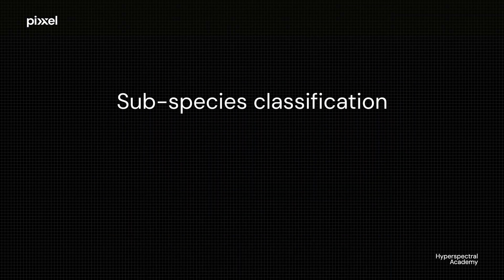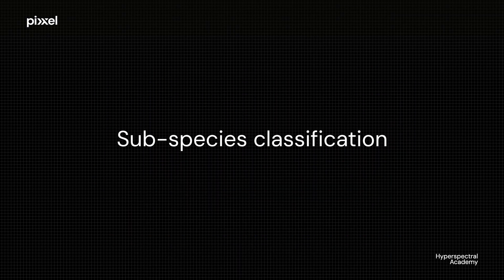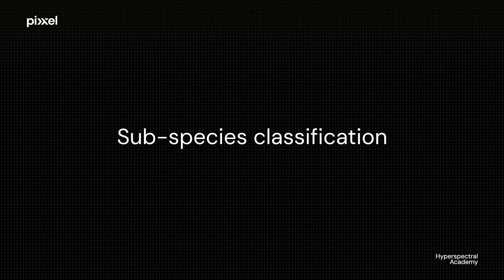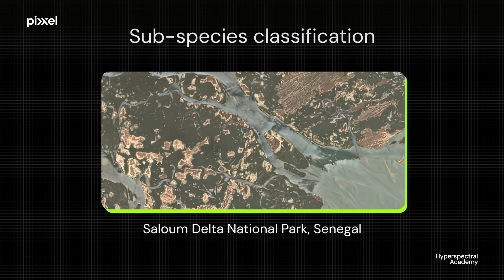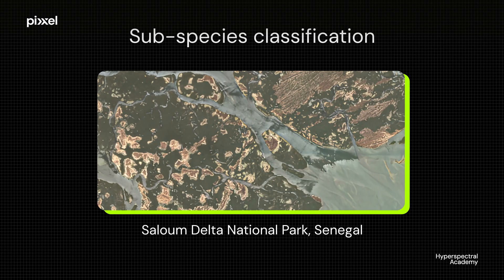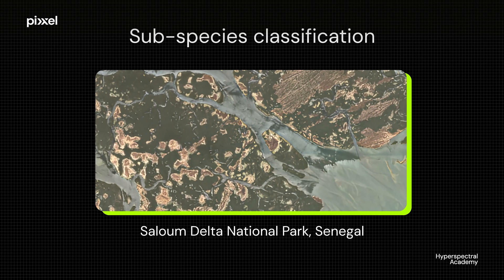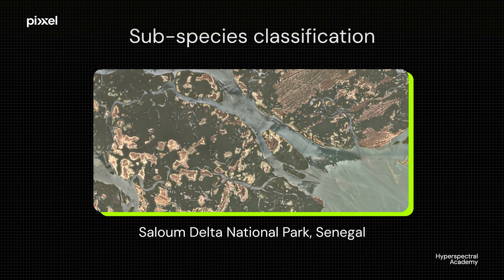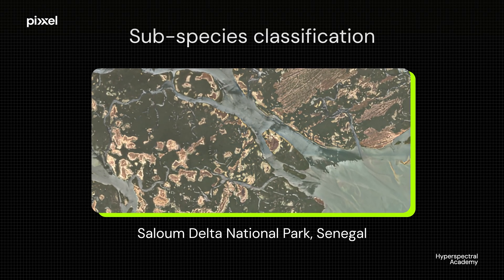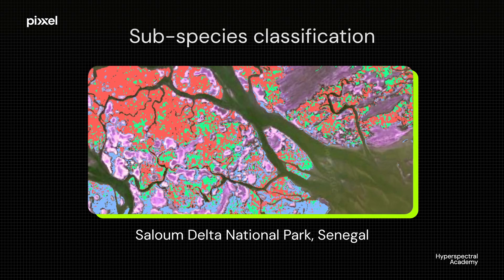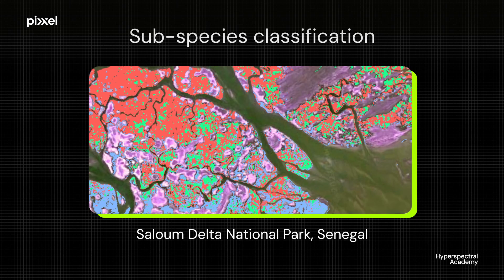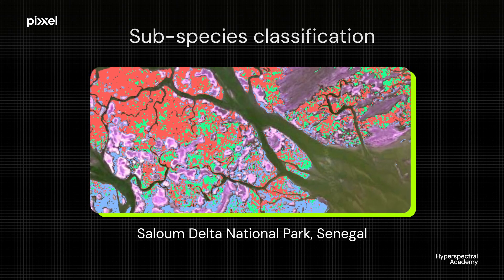Lastly, let's talk about subspecies classification. Here we have an image of Senegal. There are multiple kinds of mangrove trees in this imagery, and using hyperspectral we can actually see them just by the minor changes in the red coloration used here.